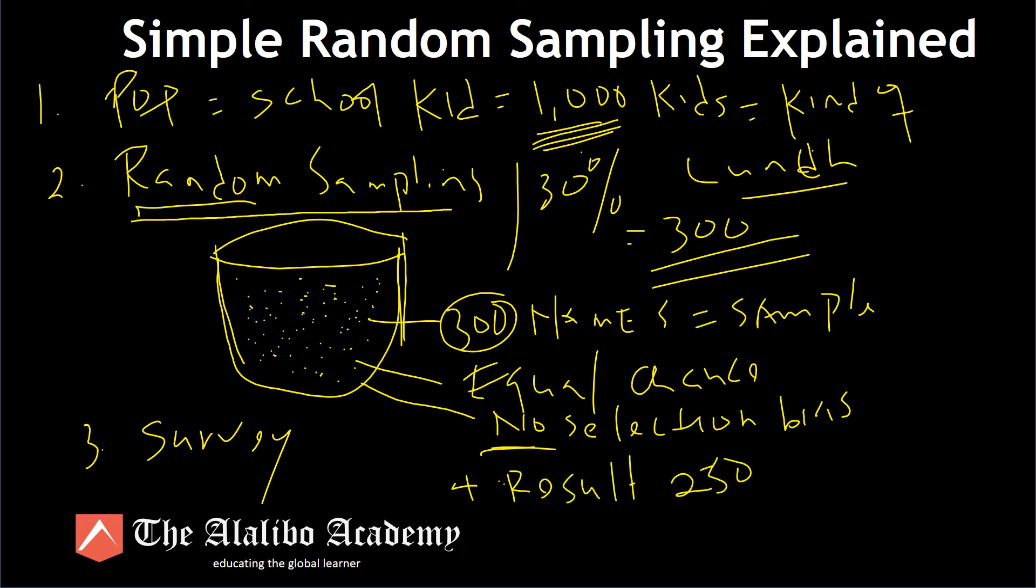Out of the 300, 250 say they like spaghetti for lunch and meatballs. Now 250 out of 300 is 83%, so 83% of the sample say they want or they like spaghetti and meatballs for lunch.